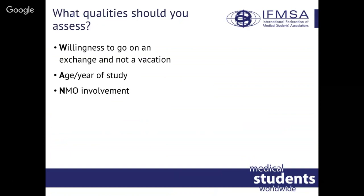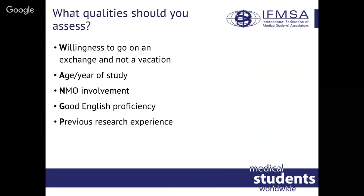NMO involvement is one of the most important criteria. You want to reward students involved in NMO activities, especially activities related to SCORE and SCOPE — the more involved, the better it is for the entire NMO. Another important factor is good English proficiency, since English is the language of our exchanges and we want to ensure the student benefits most from the exchange. Previous research experience is especially important for SCORE, though some NMOs also reward points for research in SCOPE exchanges.